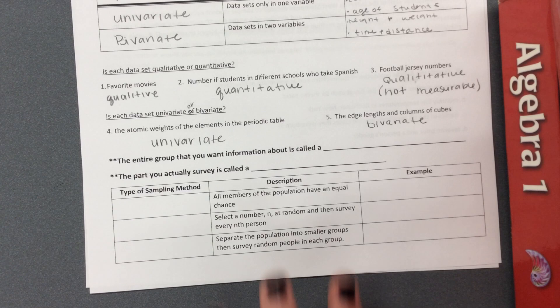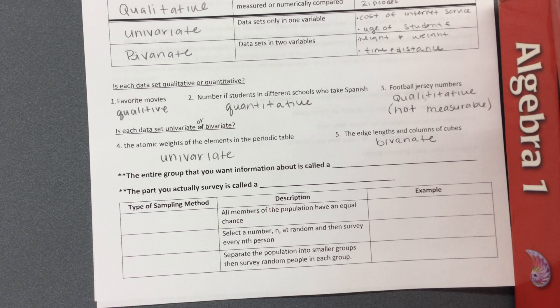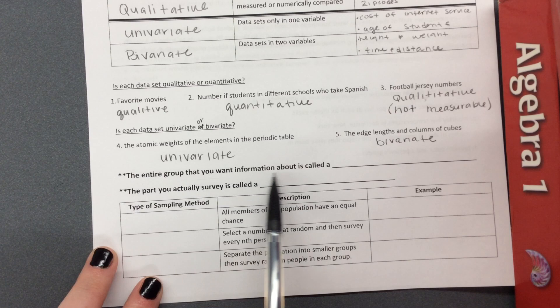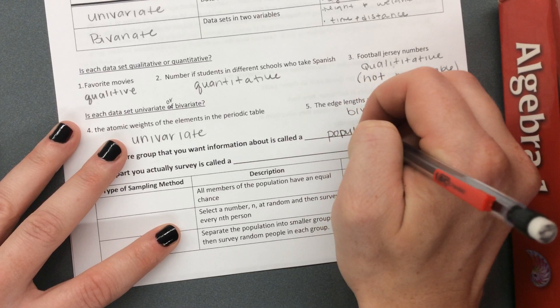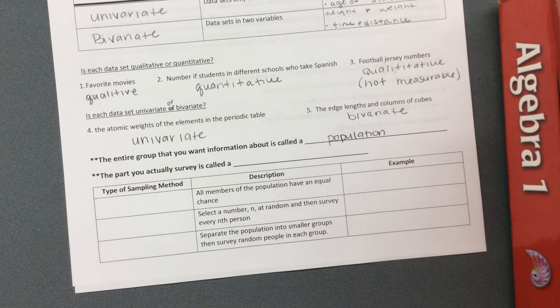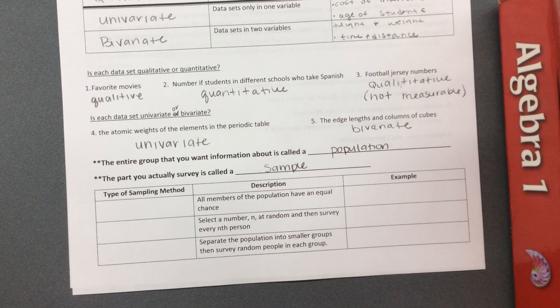Now we need to go into the different types of sampling. The entire group that you want information about is called the population. For example, if you want to sample how many high school students are watching TV before a test, the entire population is high school students. But the part you actually survey is a sample, because you don't want to survey every single high school student in the entire world. You pick a sample that represents that population — just the part you survey is called the sample.